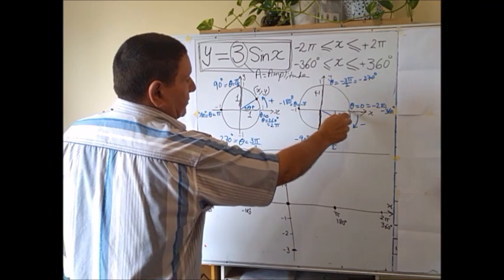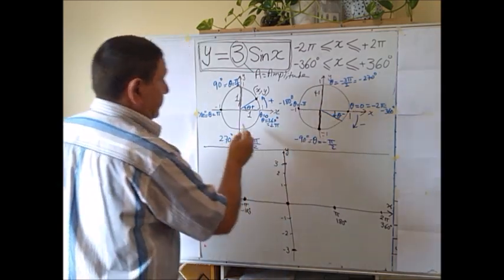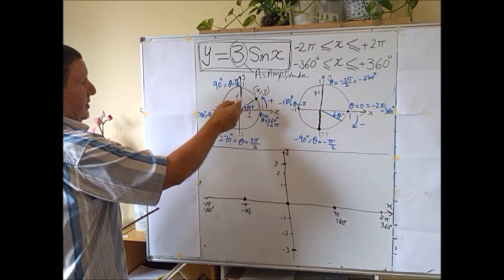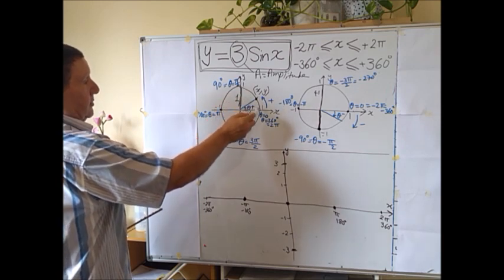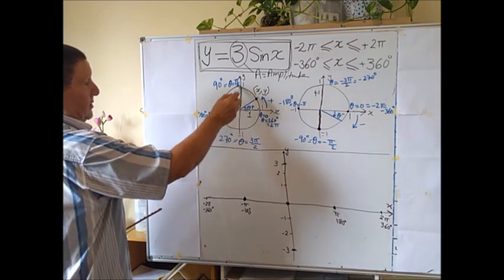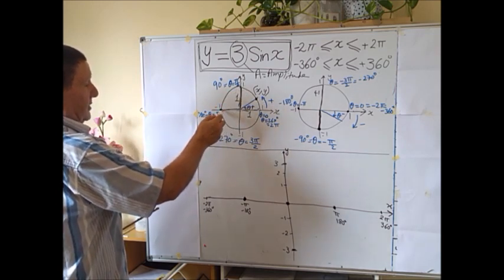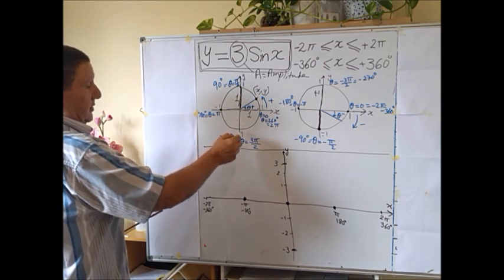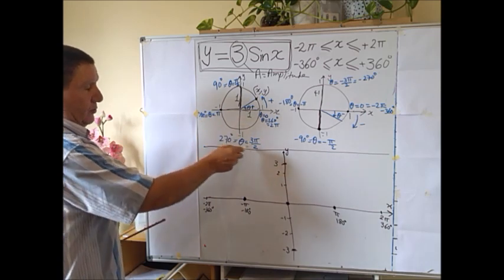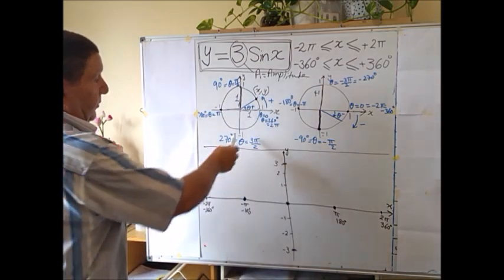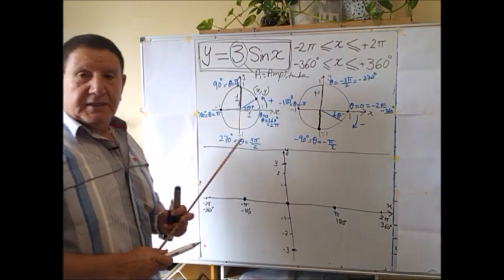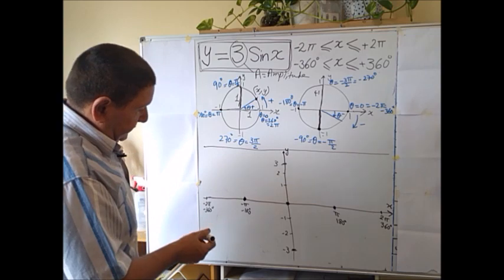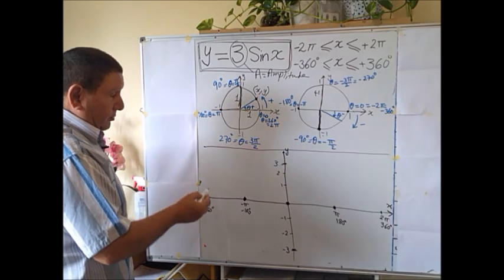At -2π the sine is 0. On the positive side: sin(0) = 0, sin(90°) = 1, sin(180°) = 0, sin(270°) = -1, sin(360°) = 0. These key values help us plot the graph on both sides.